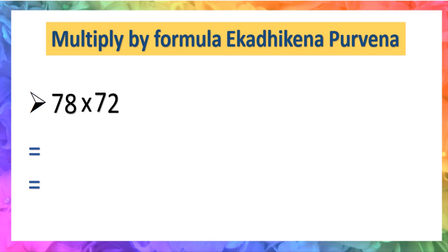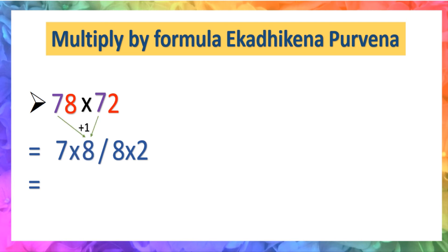Next example: 78 × 72. We will apply Sutra Ekadhiken Purven. Put a sign of slash. On the right side, multiply the ones-place digits: 8 × 2. On the left side, multiply the starting digit by one more: starting digit is 7, so one more will be 8. Now, 7 × 8 is 56 and 8 × 2 is 16. The right side must consist of 2 digits, so the final answer is 5,616.